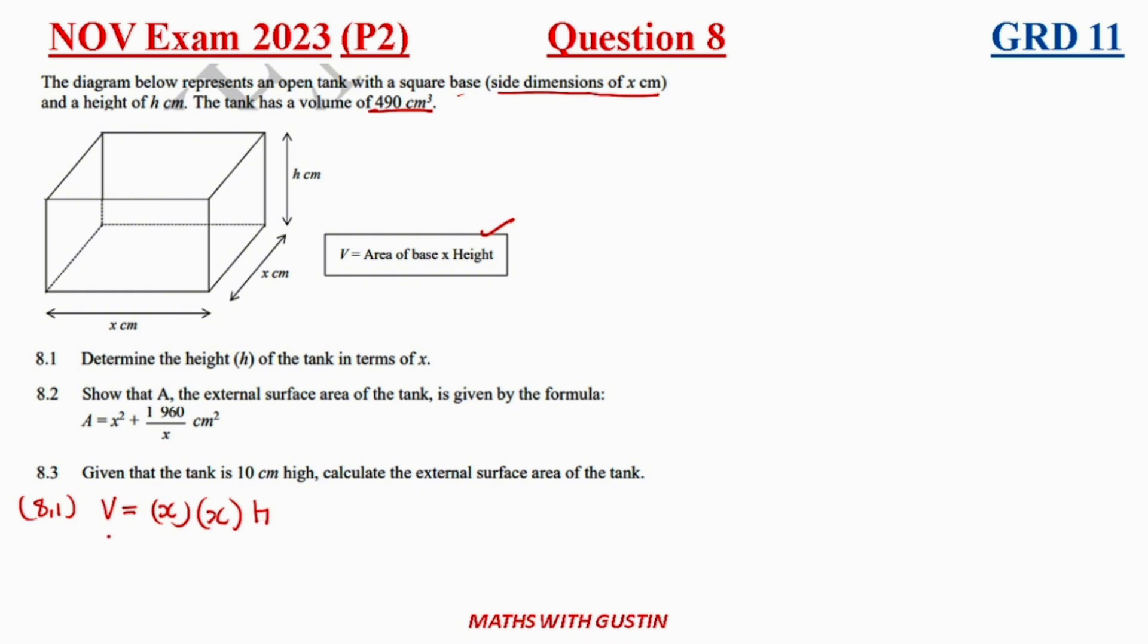So therefore it means that h is going to be x squared h and we already know they gave us the volume there. The volume is 490. So we're gonna come here substitute 490 is equal to x squared h. So they said we need to determine h here in terms of x. So we're gonna divide both sides by x squared.